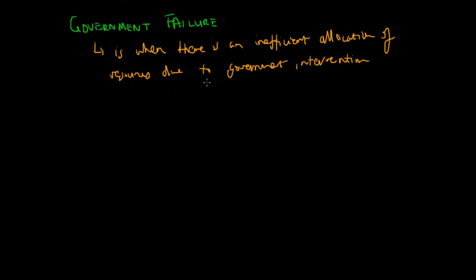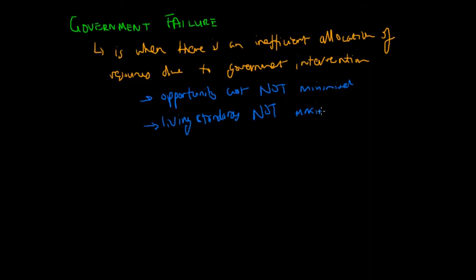Okay, so what does it mean by inefficient allocation of resources? I must stress that an inefficient allocation of resources means both opportunity cost not minimized as well as living standards not maximized. So that's the crux of what an inefficient allocation of resources actually is. So let's look at why the government fails sometimes.